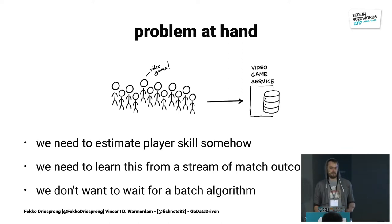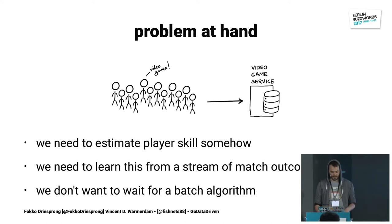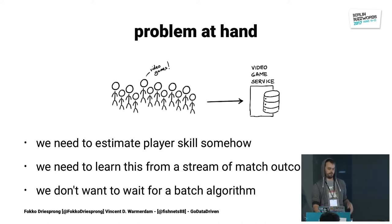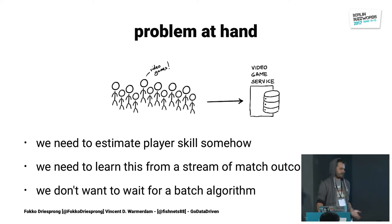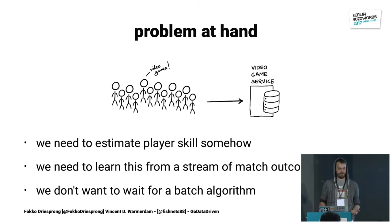We can only learn this from a stream of match outcomes. Whatever we learn comes from events that say: this player battled that player, and this player was the winner. From this, we have to get an impression of what the skill is like so that we can do some sort of matching. It would be definitely preferable if this works in a streaming setting, not in a batch setting. Preferably after every single game, the belief of the skill of both players will have been updated.